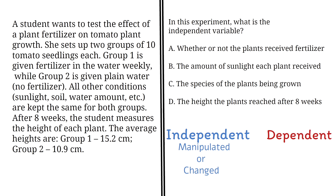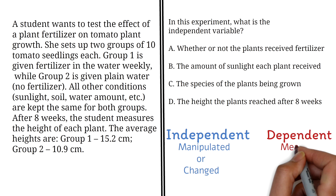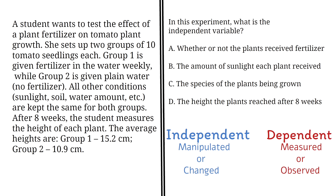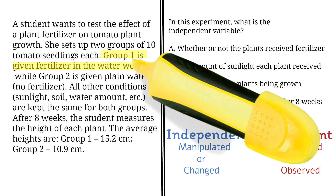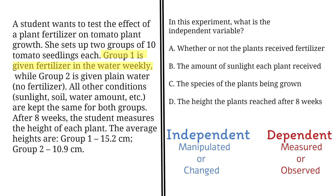On the other hand, the dependent variable is the variable that is measured or observed, and it changes in response to the independent variable. Since the experiment is testing how fertilizer affects tomato plant growth, the variable being changed is whether the plants get fertilizer or not. The plants in group one are given fertilizer in the water, while the plants in group two are given plain water with no fertilizer. So, whether or not the plants receive fertilizer is the independent variable. Therefore, the correct answer is A.